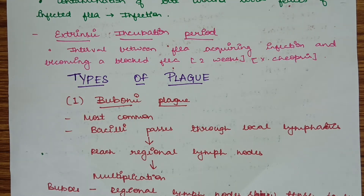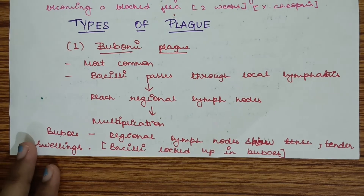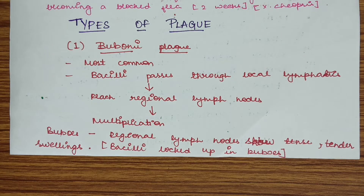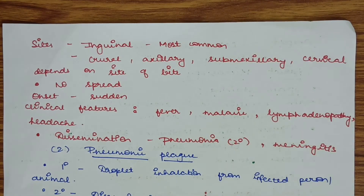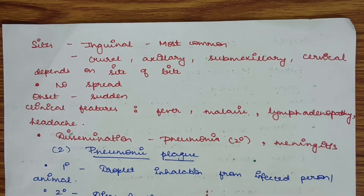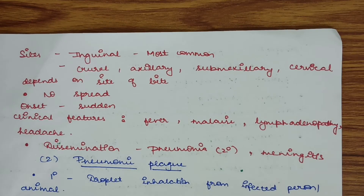Bubonic plague is the most common form of plague. The bacilli pass through local lymphatics and reach the regional lymph nodes where they multiply. Because of multiplying in the regional lymph nodes, it leads to formation of structures called buboes. These buboes are regional lymph nodes showing tense and tender swellings, and the bacteria become locked up in them. It cannot be transmitted except by direct contact with the buboes. The sites of infection include inguinal, which is the most common, followed by crural, axillary, submaxillary, and cervical. The site of the bubo depends upon the site of bite.